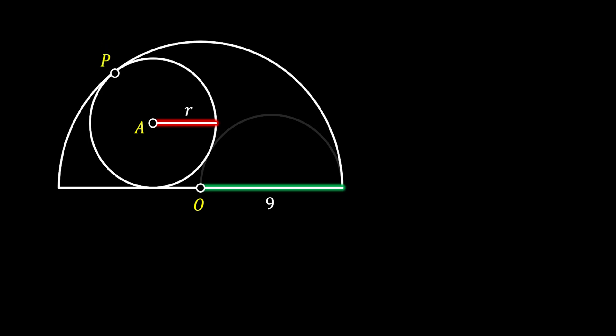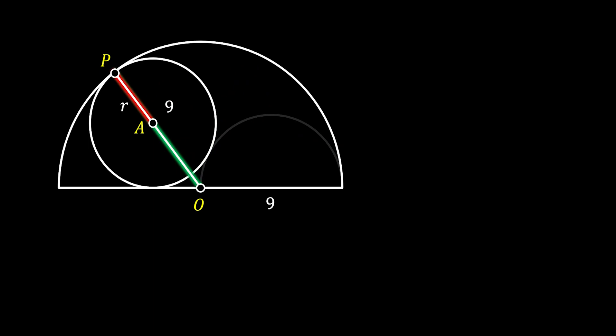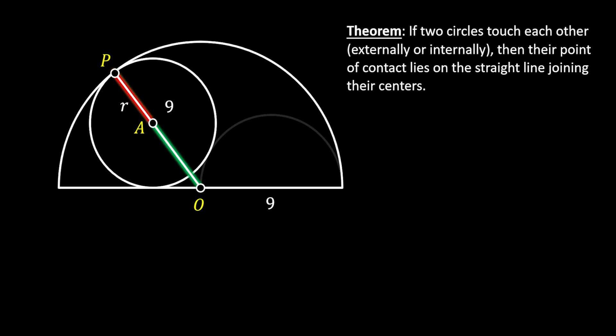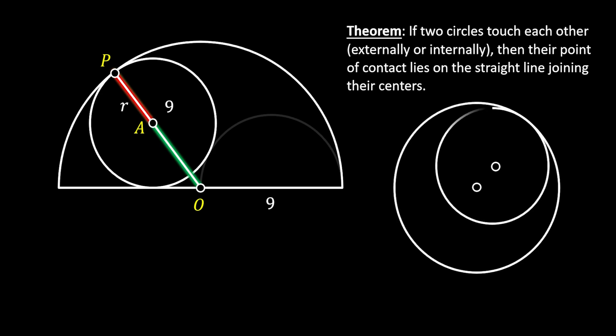Let's rotate our small radius to the point P, and do the same for the radius of our half circle. You can see that both of those radii will be located on the same line. We know this by the theorem which states that if two circles touch each other externally or internally, their point of contact lies on a straight line joining their centers. This is exactly our case here.